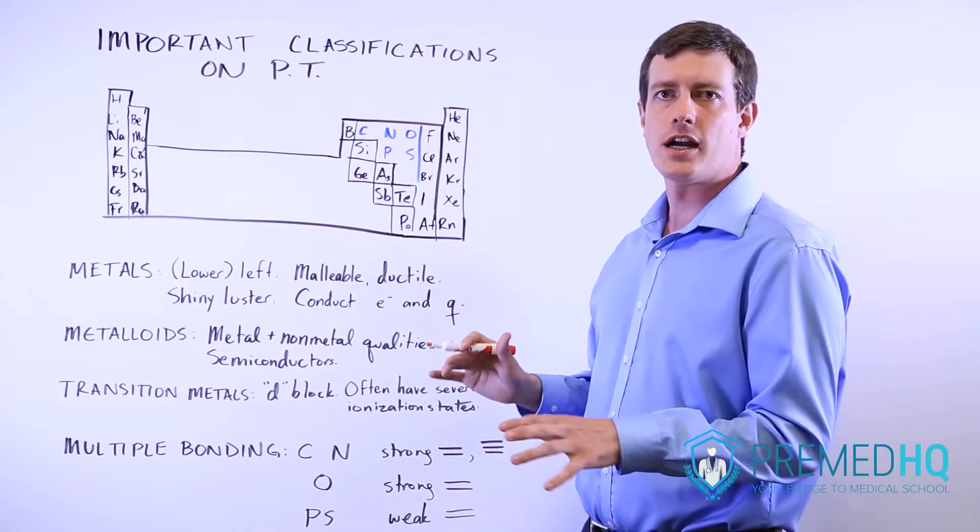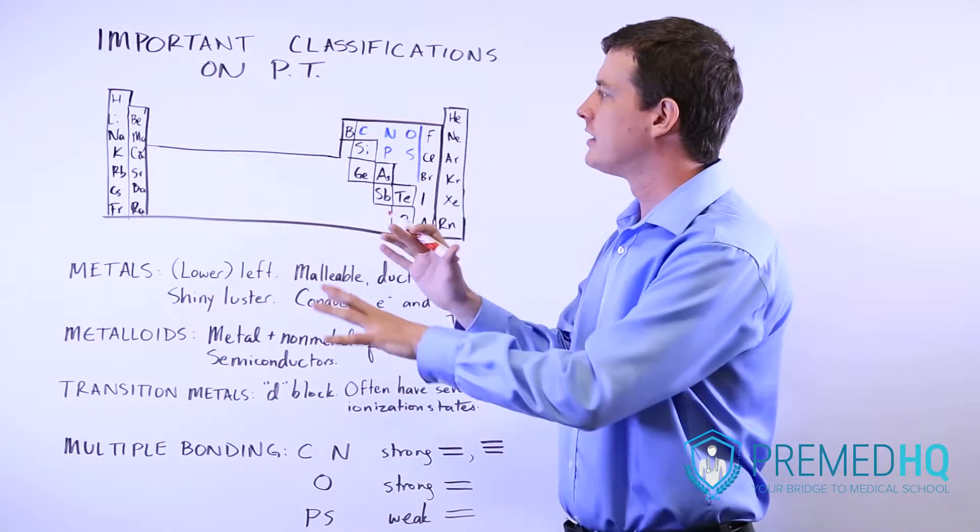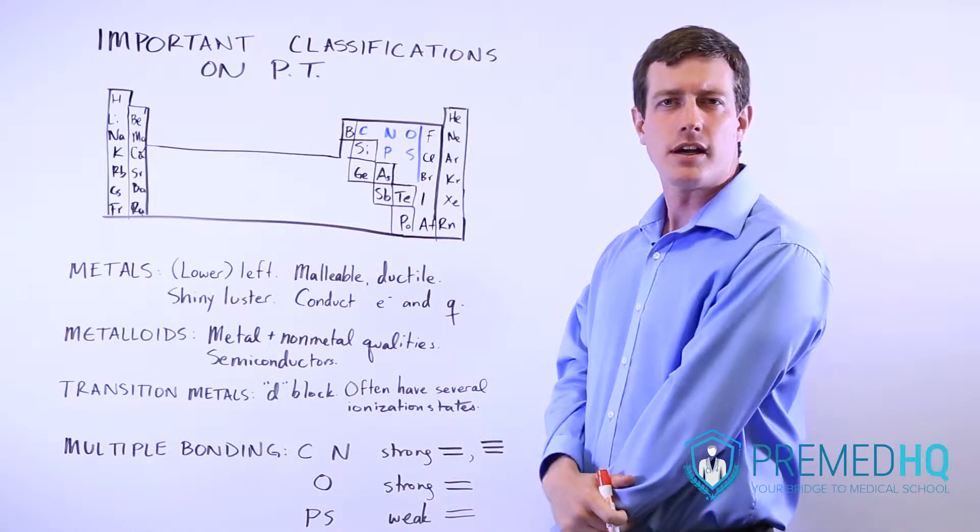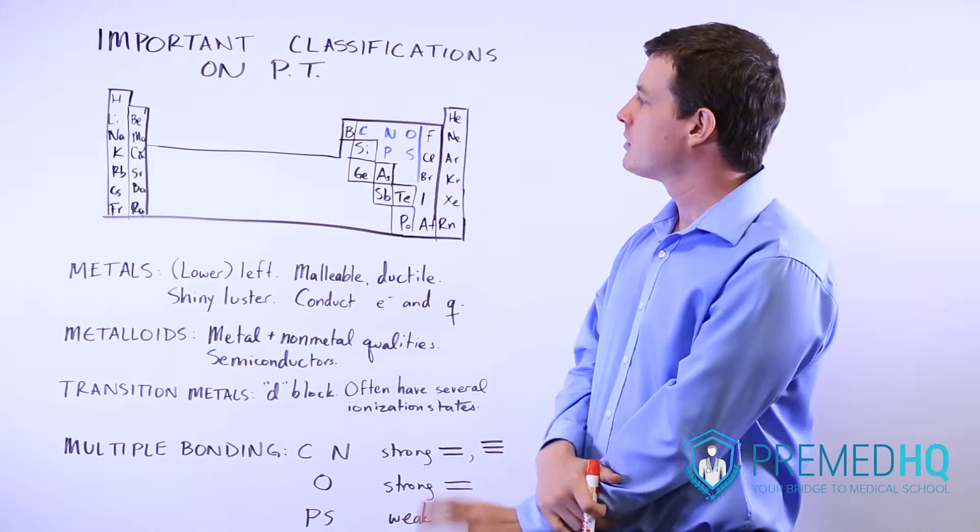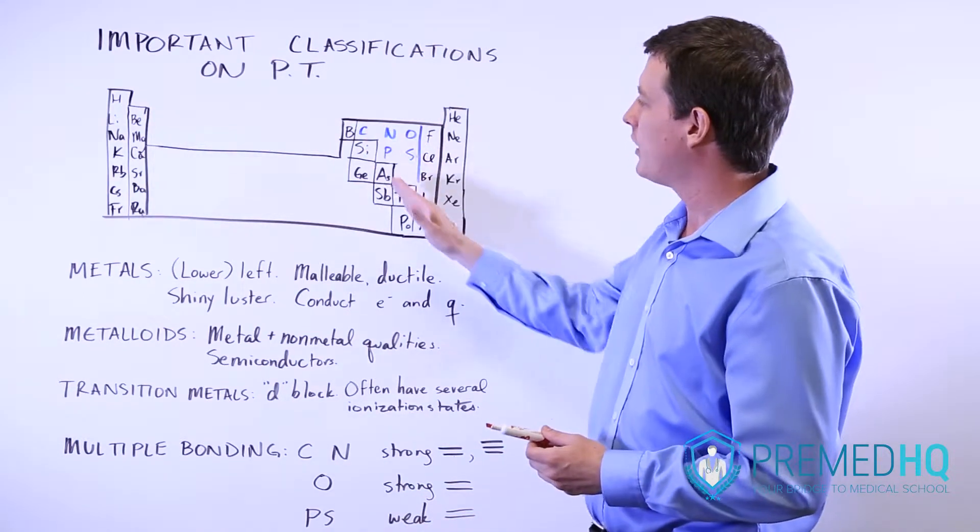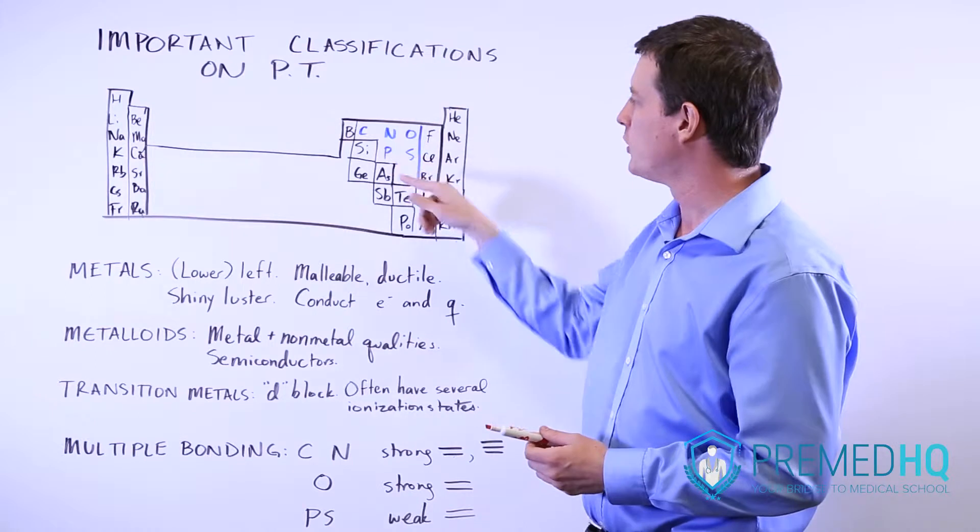Traditionally, metals have been described as the lower and left elements of the periodic table, but I think an easier way to draw this distinction is just to remember how to recognize all the metalloids.